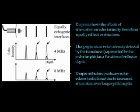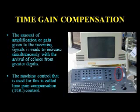As the ultrasound goes deeper, the reflected ultrasound beams give weaker signals due to attenuation. To compensate for this decreasing signal, we amplify the returning ultrasound from deeper structures. This is called time gain compensation.